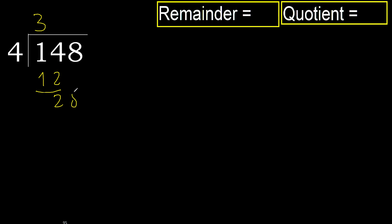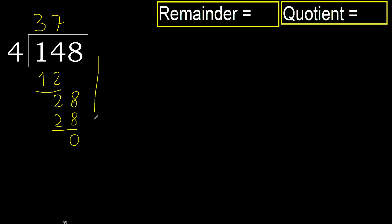Next, 28. 4 multiplied by 7 is 28 — 28 is not greater. Subtract 0. Next, that is not a number, therefore finish it.